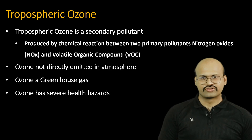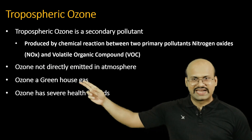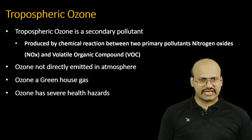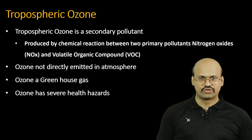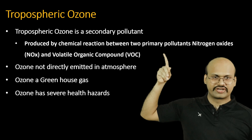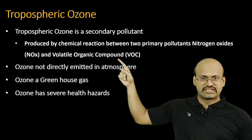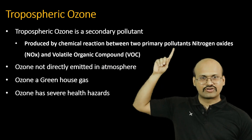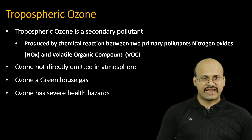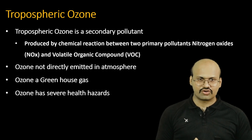Tropospheric ozone is a secondary pollutant, which means it is not directly emitted into the atmosphere by vehicles or industries. Instead, it is produced by a chemical reaction between two primary pollutants: nitrogen oxides and volatile organic compounds (VOCs). These two compounds are emitted by vehicles as well as industries, and it is the reaction between them that produces our tropospheric ozone.